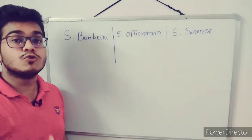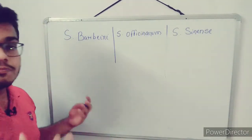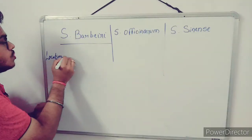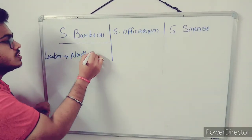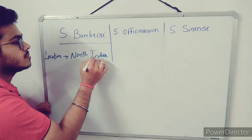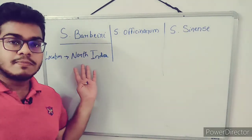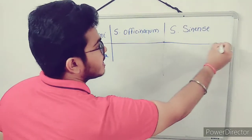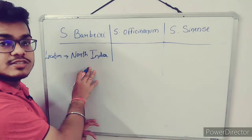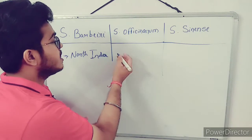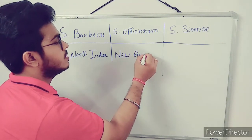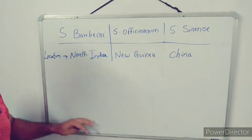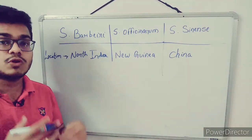Saccharum barbari originated in North India and was developed for North Indian conditions. Saccharum officinarum originated in New Guinea — it is a country, New Guinea. And Saccharum sinensis originated in China. So these are the locations where the three species evolved and were originally developed.